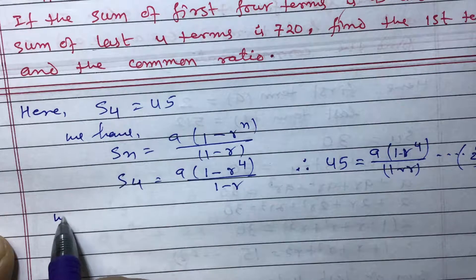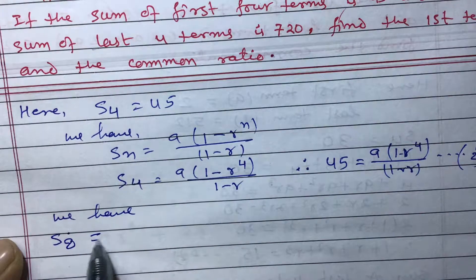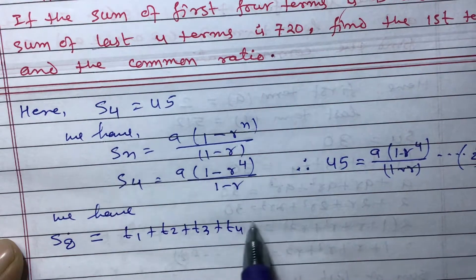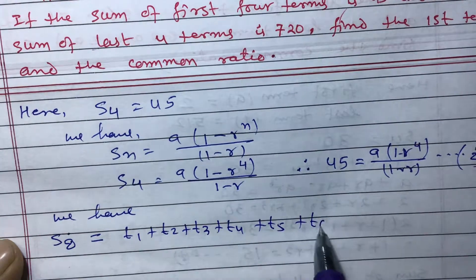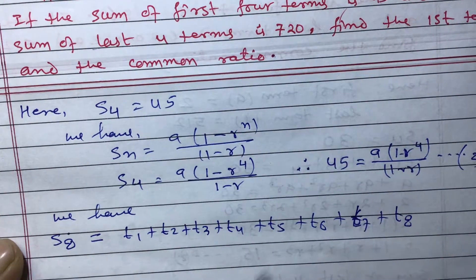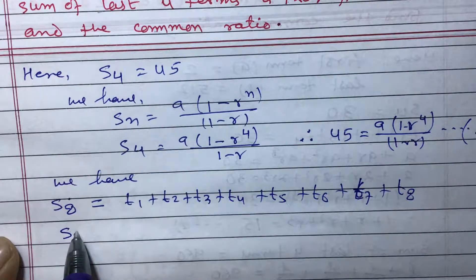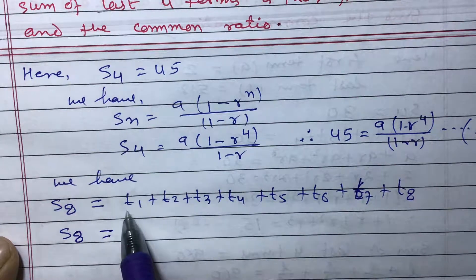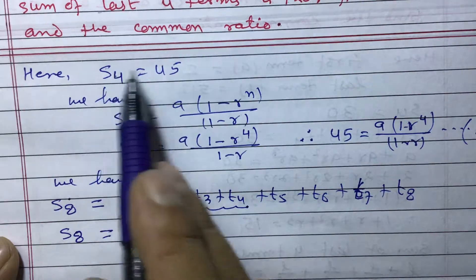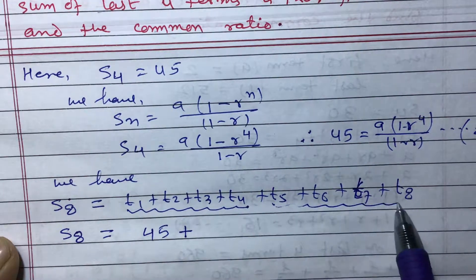S₈ means: t₁ + t₂ + t₃ + t₄ + t₅ + t₆ + t₇ + t₈. The first part, t₁ + t₂ + t₃ + t₄, is S₄ = 45. So we can write S₈ = 45 plus the sum of the last four terms (t₅ + t₆ + t₇ + t₈).